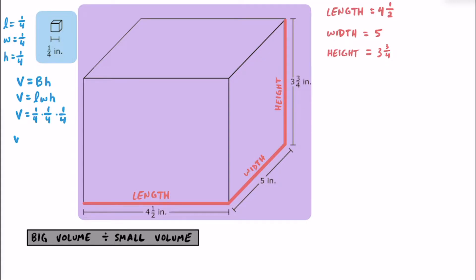Since all dimensions are the same because it's a cube, we're going to have a quarter for the length multiplied by a quarter for the width multiplied by a quarter for the height. So the volume of this little unit cube is going to be one times one times one on top, which is just one, and four times four times four on the bottom, which is 64. So the volume of one of these little cubes is going to be one sixty-fourth of a cubic inch.